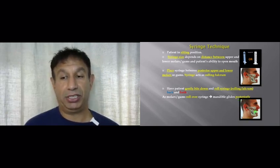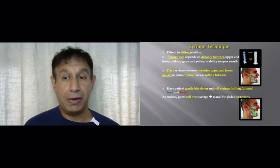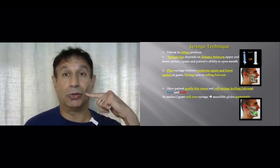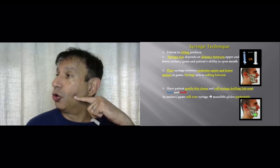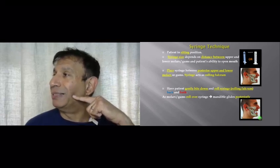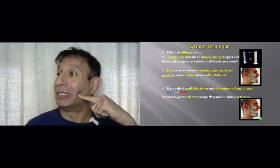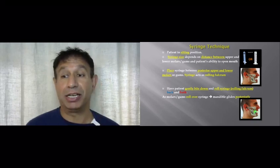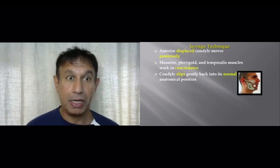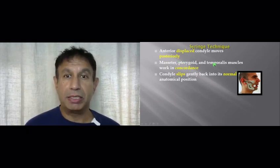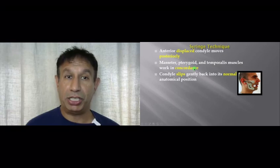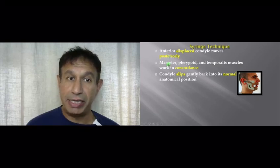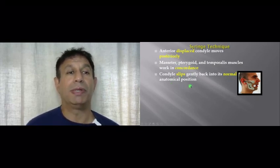So essentially, that is the syringe here. And then we tell the patient while biting down on the syringe with the syringe acting as a rolling fulcrum to push his or her jaw forwards and then backwards, forwards and then backwards. So the patient is moving the jaw forwards and backwards using this syringe as a rolling fulcrum. This allows the muscles to work in concordance with each other, allowing the anteriorly displaced condyle to move posteriorly and the condyle slips gently back into its normal anatomical position.